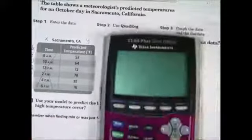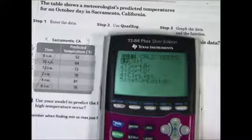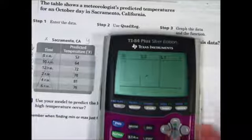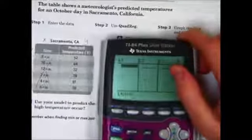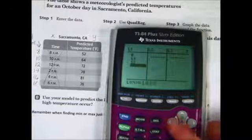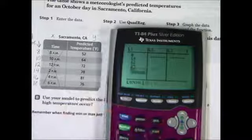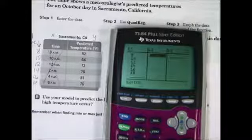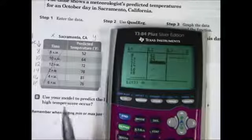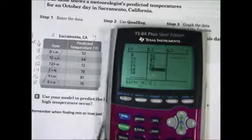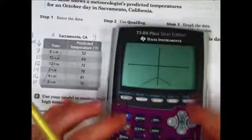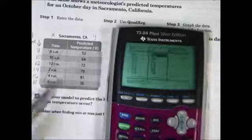Just like you did before, you're going to go to stat, edit, and you're going to clear any old values that you had. You should remember how to do this from chapter 3. We're going to put in our military times: 8, 10, 12, 14, 16, 18. We're going to put in the predicted values that the meteorologist had: 52, 64, 72, 78, 81, and 76. So those are no different than what they were before. So there they are in our table.